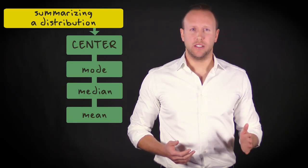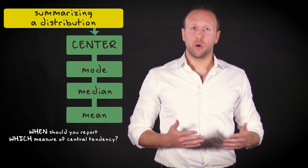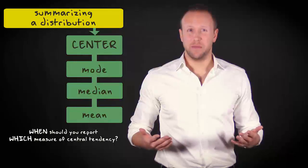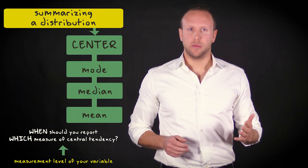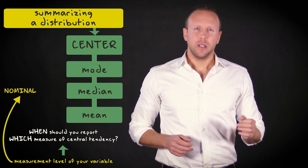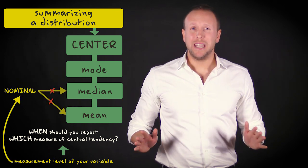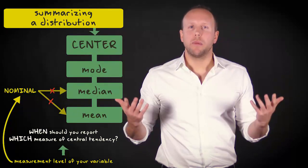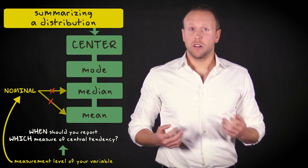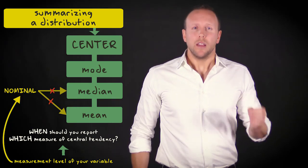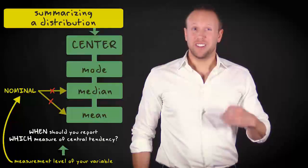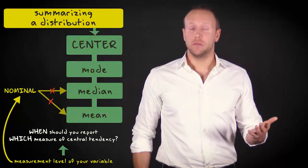You're quite familiar now with the three M's, and you can easily compute the middle of a group of scores in various ways. But when should you report which measure of central tendency? That partially depends on the measurement level of your variable. If it's nominal, it is impossible to compute the median or the mean. Think about it. You cannot apply numerical operations on nominal variables, nor can you order them. The only appropriate measure of central tendency when a variable is nominal is the mode.